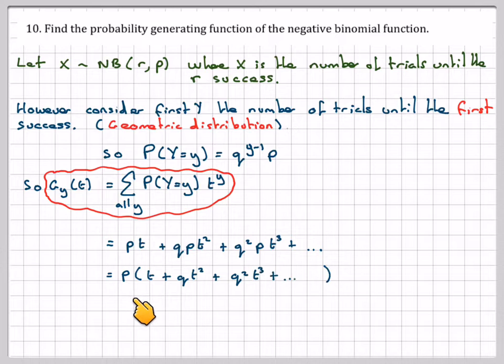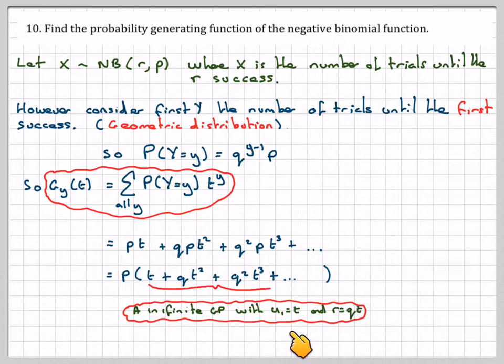p comes out as a common factor, so we get p brackets t plus qt squared plus q squared t cubed plus... This is an infinite GP with u_1 equal to t and r equal to qt, the common ratio.